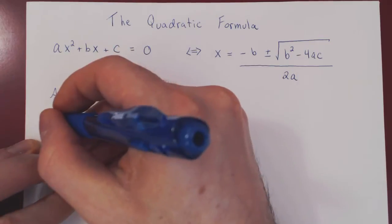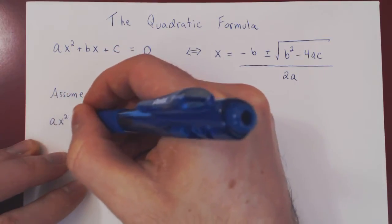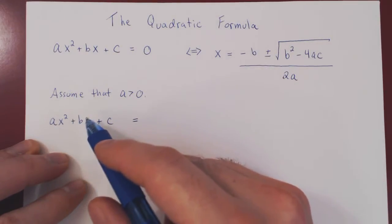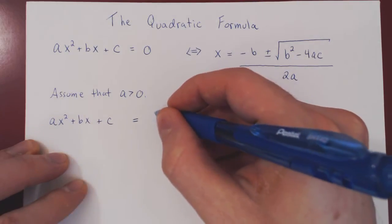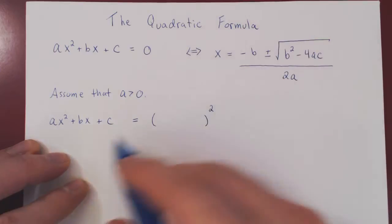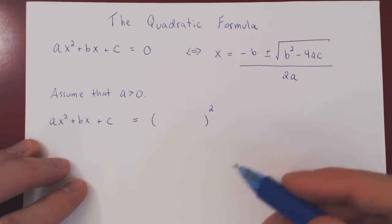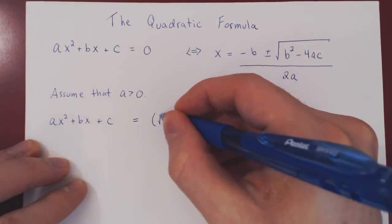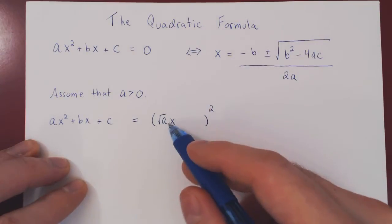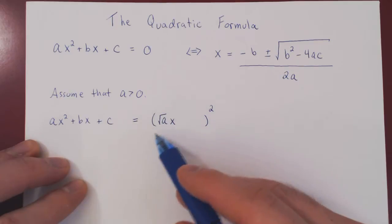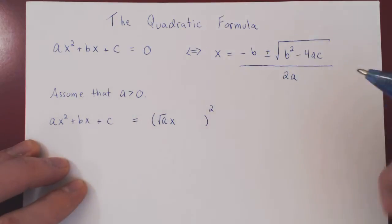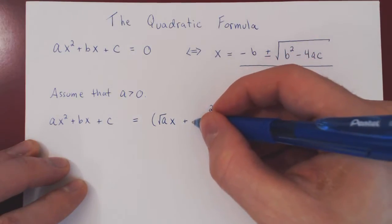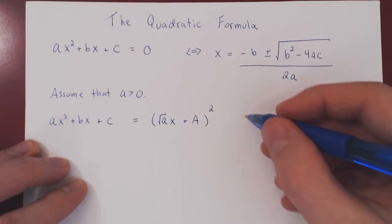Let's take the left-hand side: ax squared plus bx plus c. The idea of completing the square is the elimination of the linear factor — the multiple of x. The question is: can we write this expression as something squared plus a constant? What squared will give you ax squared? It will be root of a times x — if you square this, you get ax squared, assuming that a is positive. Then we need a constant here, which we can call uppercase A for now.